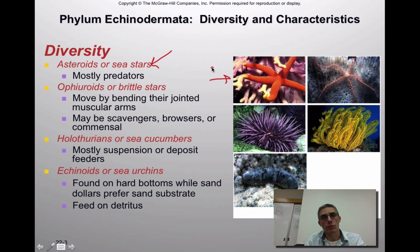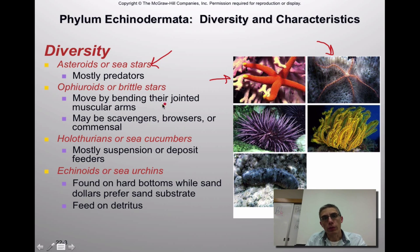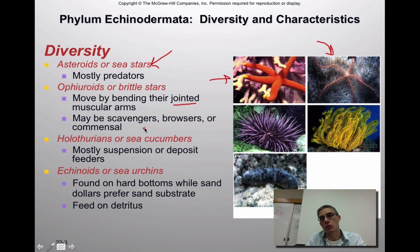The ophiuroids, or brittle stars, are very similar to the sea stars. They're considered brittle because their arms are very delicate with many joints, making them easily broken off. However, brittle stars are actually much easier to move throughout their environment compared to typical sea stars. They're typically scavengers, browsers, or they can have commensalistic relationships — sometimes stealing food from their host.